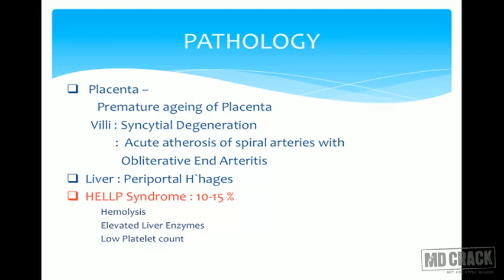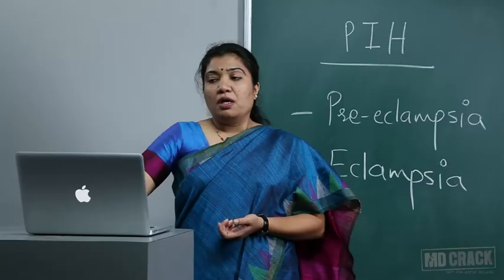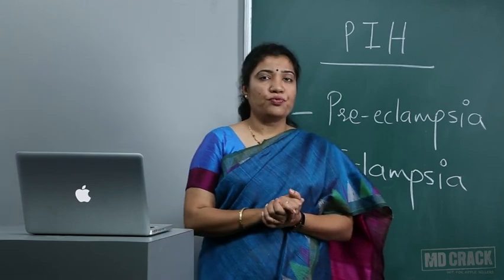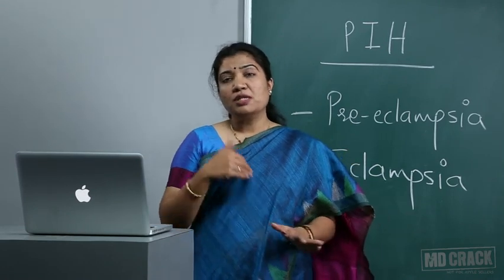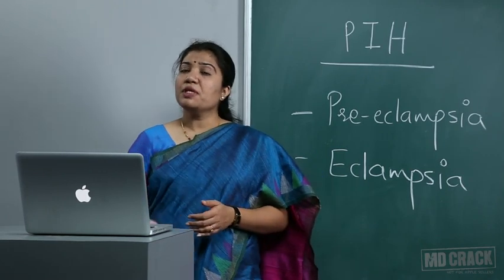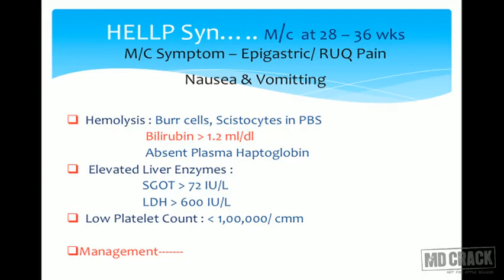In the liver, endarteritis changes and periportal hemorrhages lead to HELLP syndrome, found in about 10 to 15 percent of PIH cases. HELLP means: H — Hemolysis, EL — Elevated Liver enzymes, LP — Low Platelet count. It is seen mostly at 28 to 36 weeks. The patient presents with PIH plus epigastric or right upper quadrant pain, with nausea and vomiting. Hemolysis signs include serum bilirubin more than 1.2 mg/dL, schistocytes and burr cells on peripheral blood smear, and absent haptoglobin.